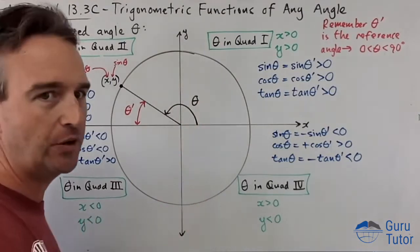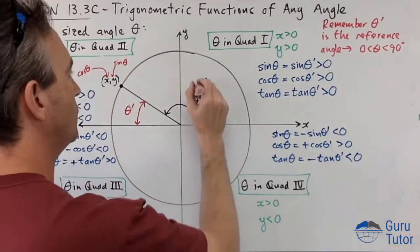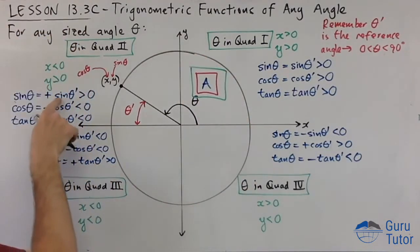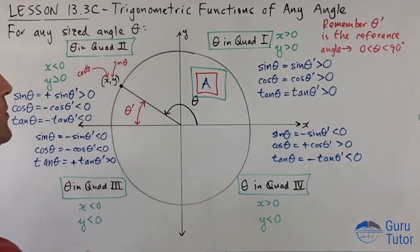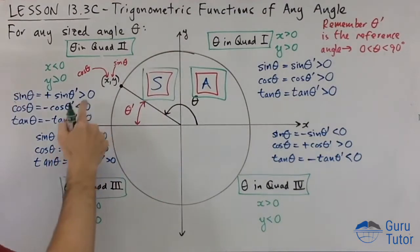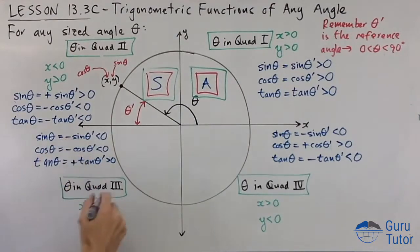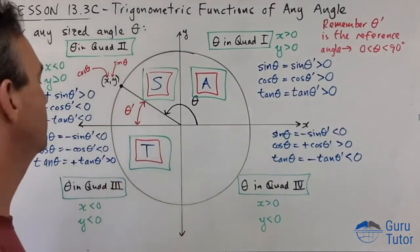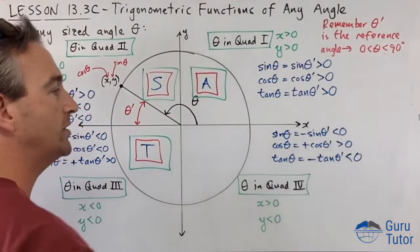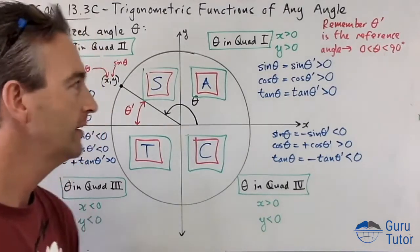Here's what to remember: in the first quadrant, sine, cosine, and tan are all positive — just use SOH CAH TOA. In the second quadrant, only sine is positive; the other two are negative. In the third quadrant, only tan is positive; sine and cosine are negative. In the fourth quadrant, only cosine is positive; the other two are negative.